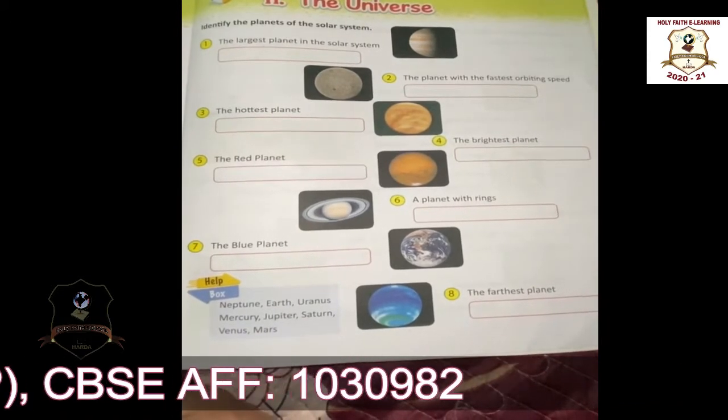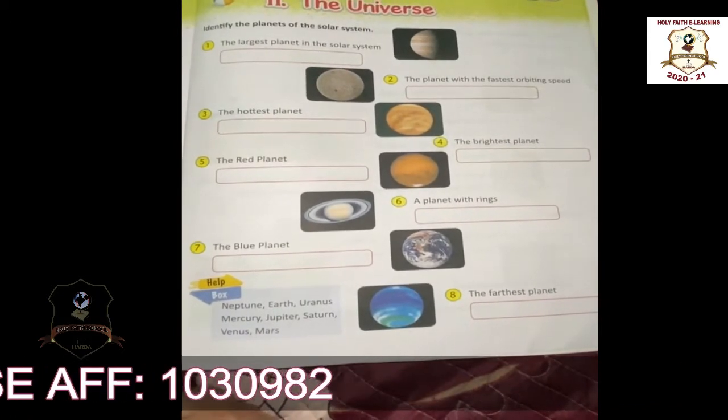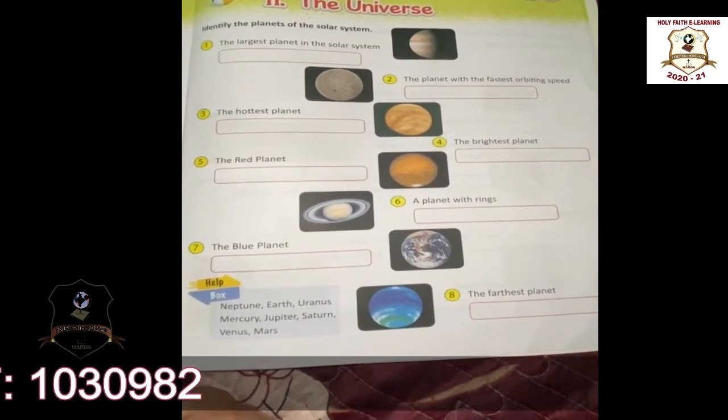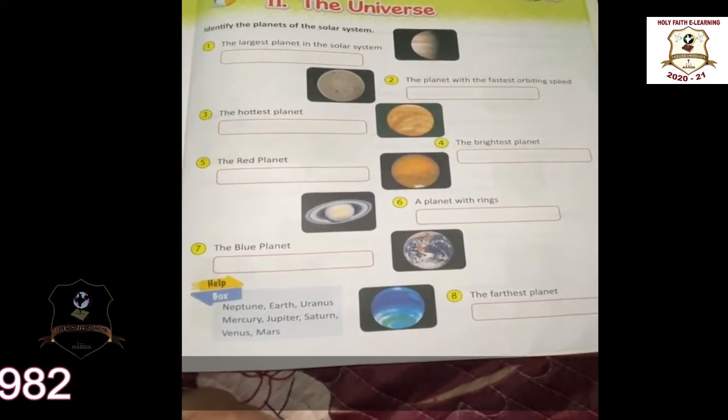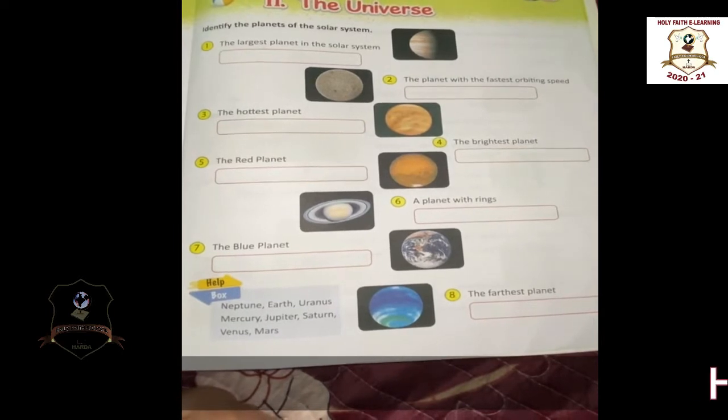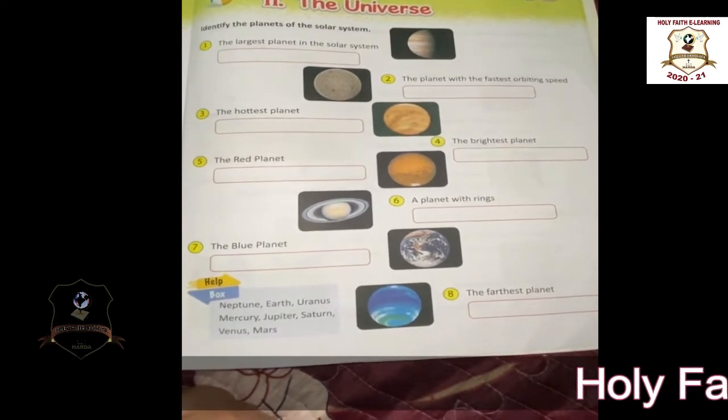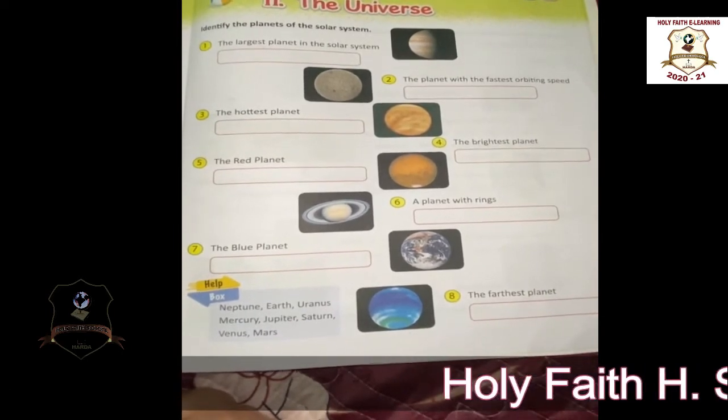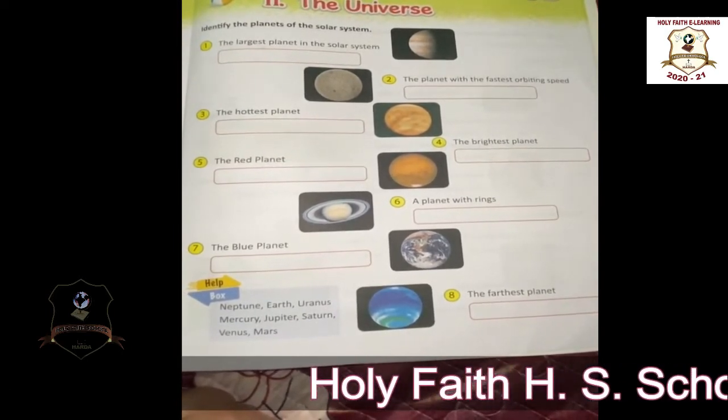So the first planet is Mercury, and the last planet is Neptune.